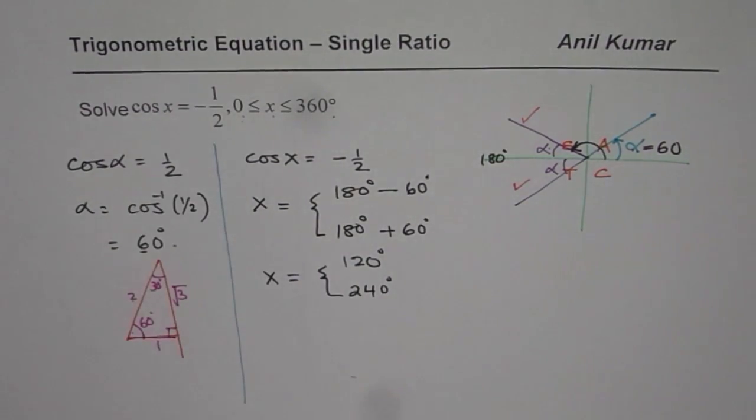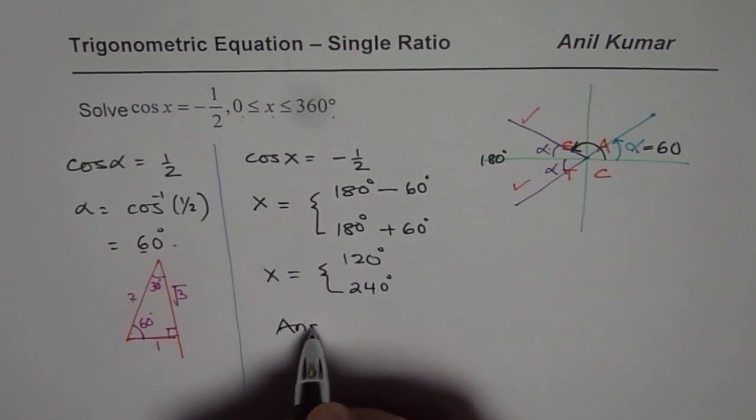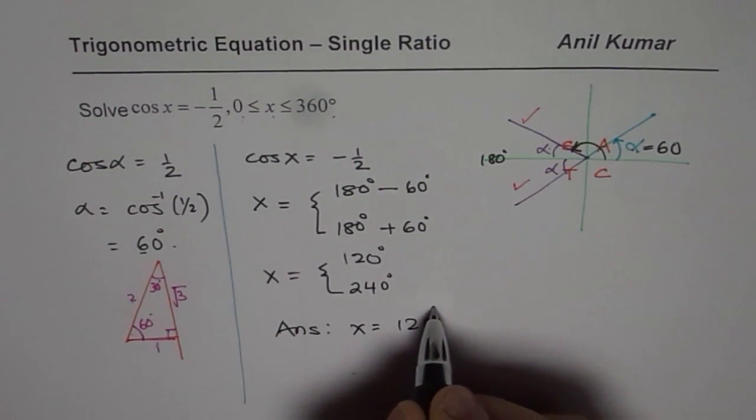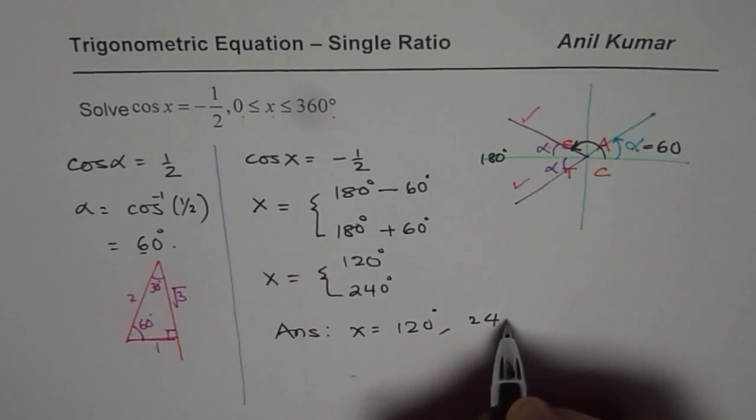So these are the two answers in the given domain 0 to 360 where cos x is minus half. So we will write down our answer as x equals 120 degrees and 240 degrees.